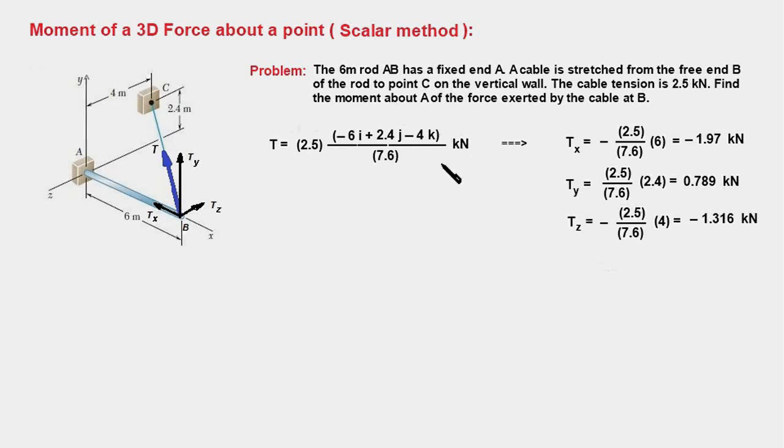Now we have to determine the magnitude of the components. The component Tx would be the I coefficient, and you can see that it is 2.5 times 6 divided by 7.6, and it is negative, so it will work out to minus 1.97 kilonewtons. Similarly, we find out the J and K coefficients which would give us Ty and Tz components. Note that Tx and Tz are negative forces; that means we have to show their direction in minus Z and minus X direction in our diagram. Showing the correct direction of the components is extremely important as we are going to visualize the rotational aspects of these components about certain axis.